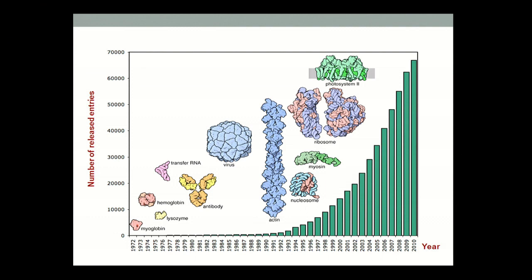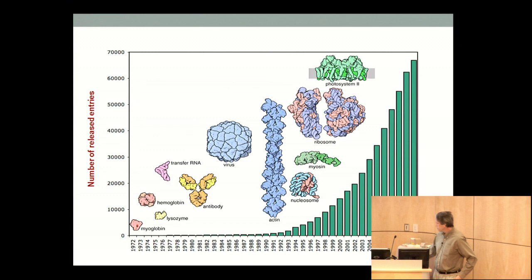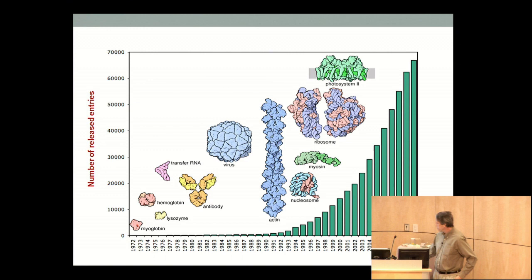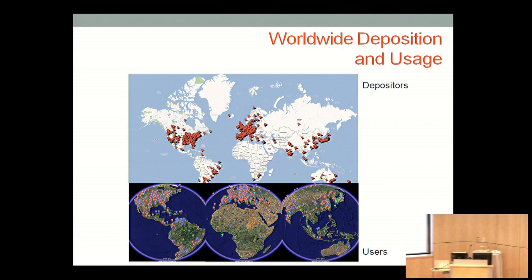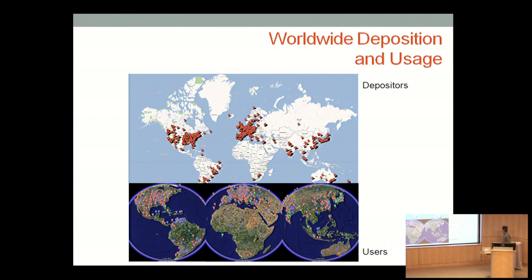Representing a repository, it's compulsory to provide a growth curve. This is the PDB growth curve that shows both the rise in the number of structures and the increase in the complexity of structures, and as you can see, both are increasing rather dramatically. Since we started at the RCSB managing the PDB in the late 90s, there were not quite 10,000 structures, and we expect to get that many structures deposited this year alone. This is very much a worldwide enterprise, both from people contributing to the resource and using it.